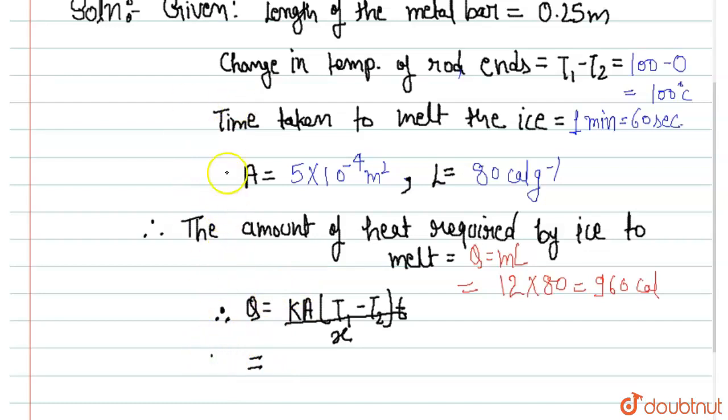We have 960 calorie. For k we have to find k. We have area is 5 into 10 to the power minus 4 and 100 into 60 upon we have 0.25 meter length of rod.